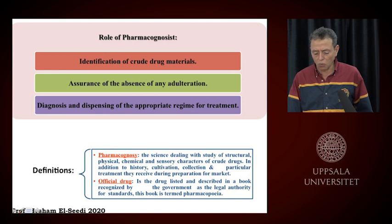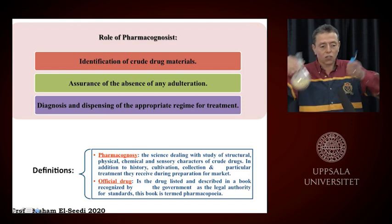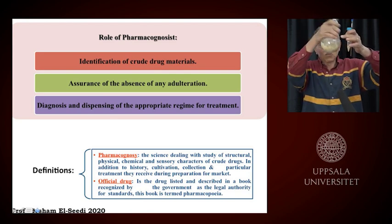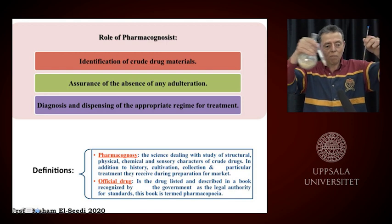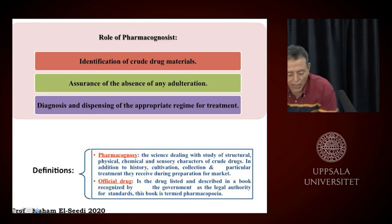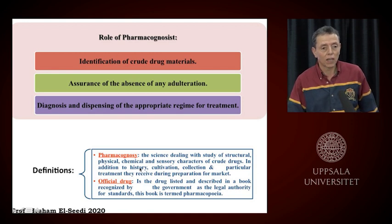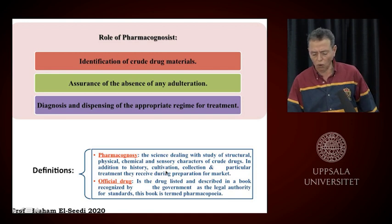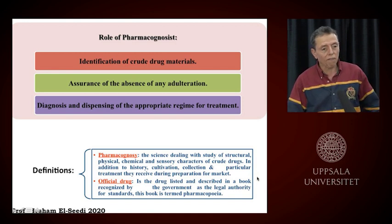Pharmacognosy is the science dealing with the study of structure — what is the structure, what is the chemical compound. We take the plant material, get the crude drug, then try to isolate it into fractions, and finally to the pure compound. Then you get the structure of this pure compound. You characterize the structure and see the biological activity. You must also consider the history: is it really from the original place? What is the cultivation? How is it cultivated — using standard international methods or not? What about collection and the treatment received during preparation for the market? This is really important in order to have a safe drug.